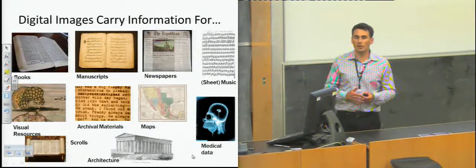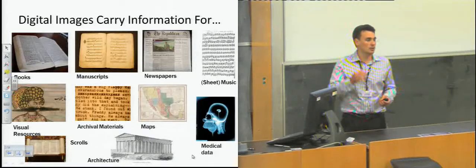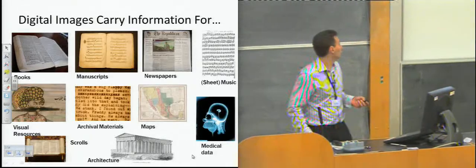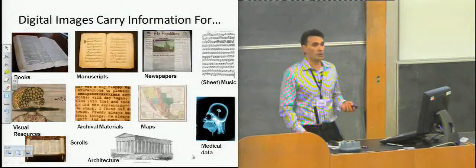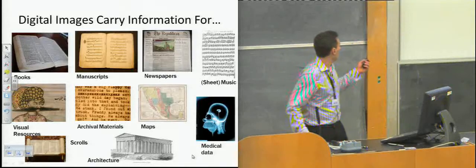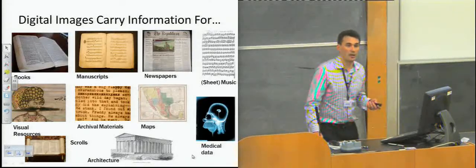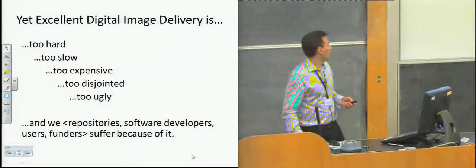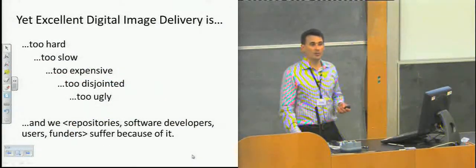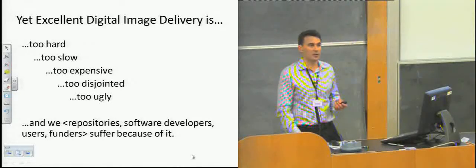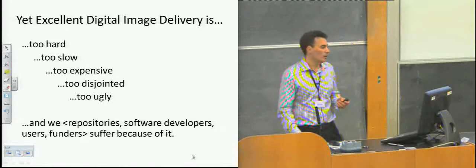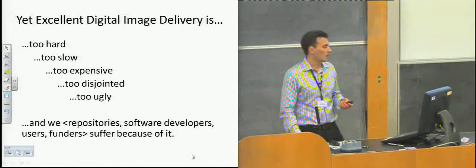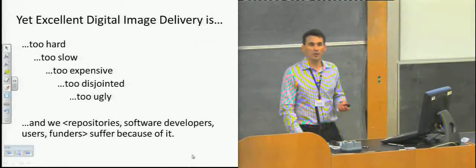There's sort of an irony in the fact that digital images are one of the primary information carriers for lots and lots of content on the internet. So it's books, manuscripts, newspapers, visual resources, archival materials, maps, scrolls, architecture, there's even medical data, and various types of science, technology, and engineering products that are all visually conveyed. And yet, ironically, really excellent image delivery is difficult. It's technically challenging. It tends to be slow. It tends to be expensive to develop and deploy, either in terms of licensing or in terms of time. When it is deployed, it's disjointed across our community and across our environment. And often it's ugly.